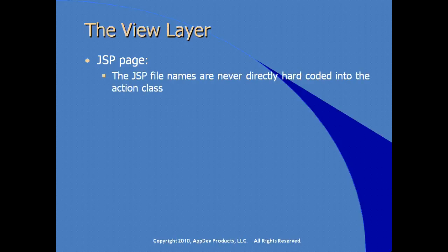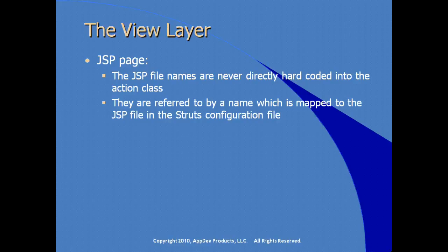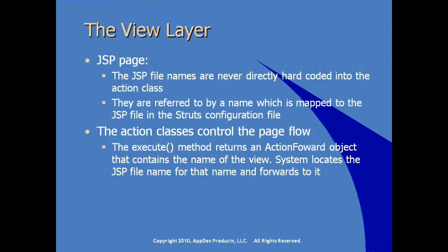In the view layer of a Struts application, you have a standard JSP page. The JSP file names are never directly hard-coded into the action class, as that would tie file names too closely to the source code. They are referred to by a name mapped in a configuration file called the Struts configuration file. The action classes control the page flow and navigation rules. The execute method returns an action forward object containing the name of a view, and the system locates and forwards to the associated JSP file.